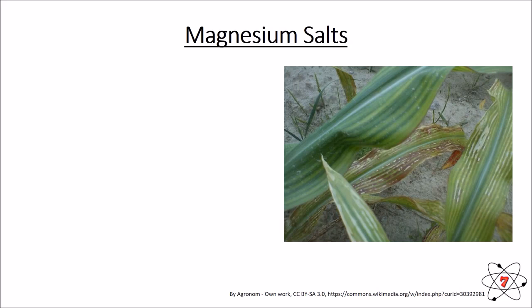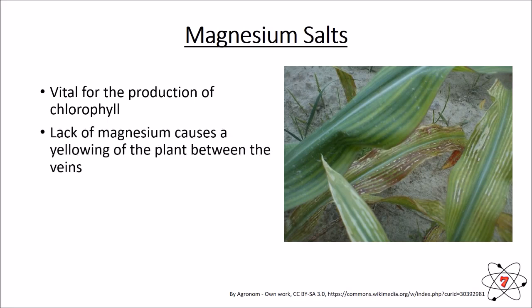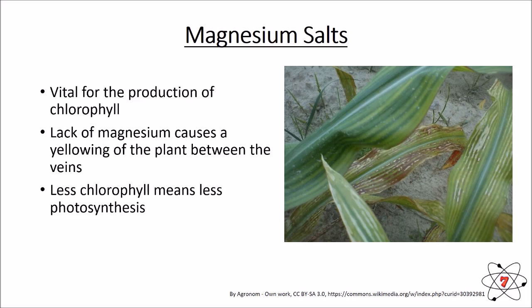Magnesium is another really important salt. It's vital for the production of chlorophyll, and chlorophyll absorbs sunlight, which provides energy for photosynthesis. A plant that doesn't have enough magnesium has yellow leaves in between their veins — you can see this very clearly in the picture. Not enough chlorophyll means less photosynthesis, less glucose being produced, and plants cannot synthesize as many of the other chemicals that they need.